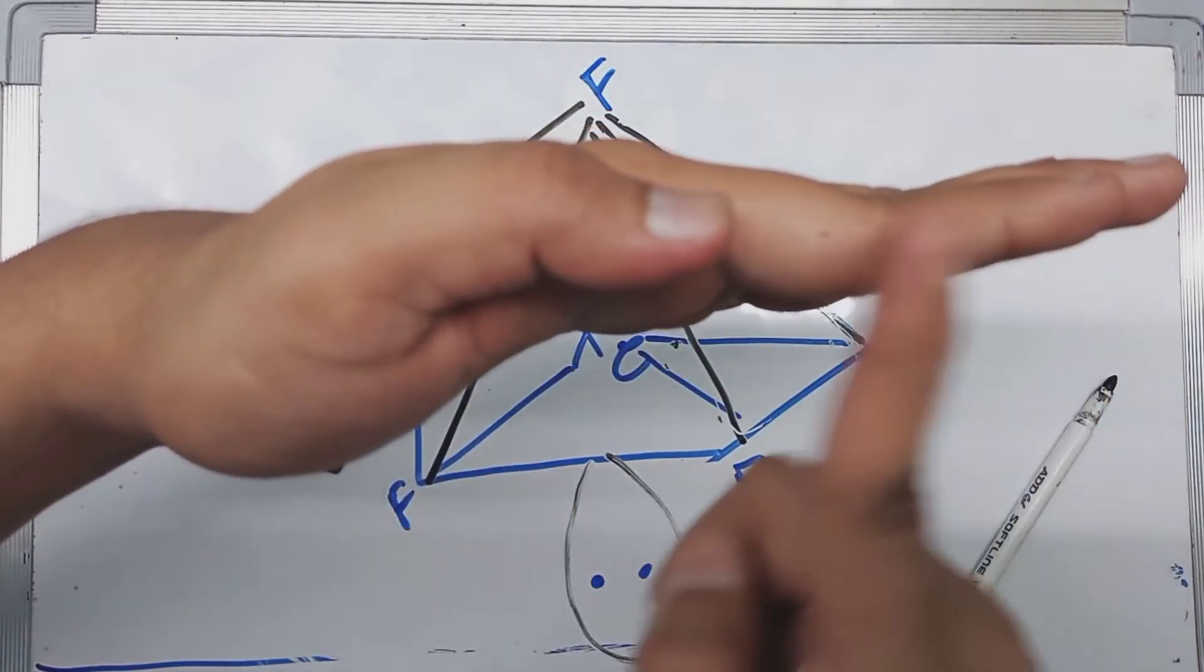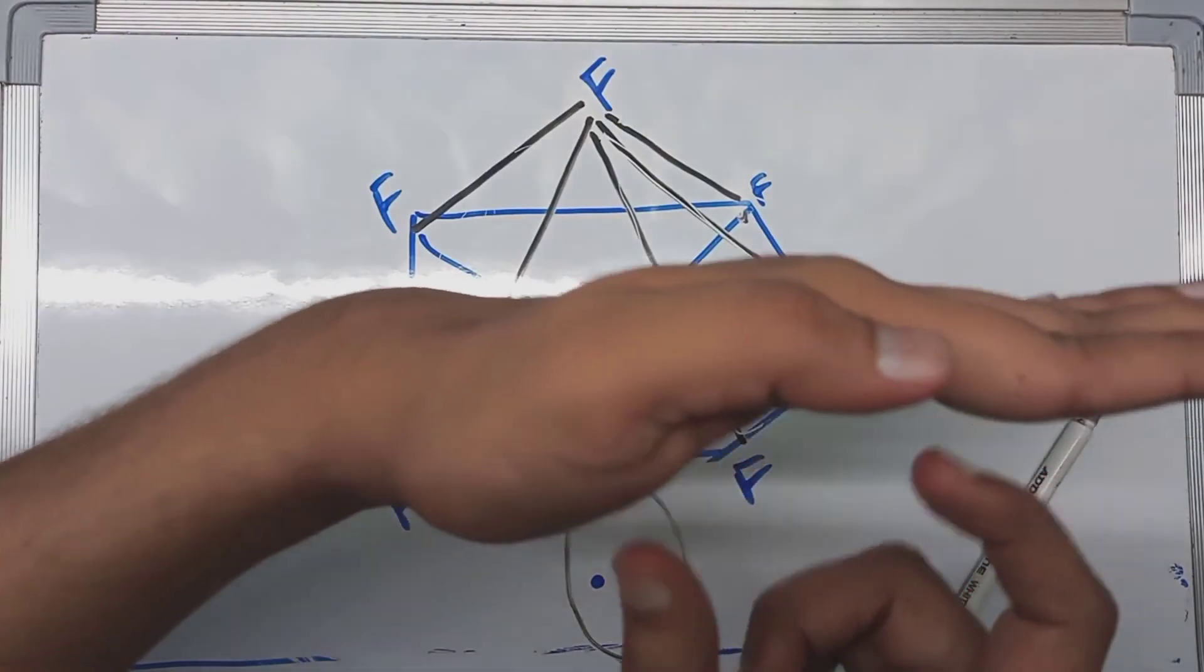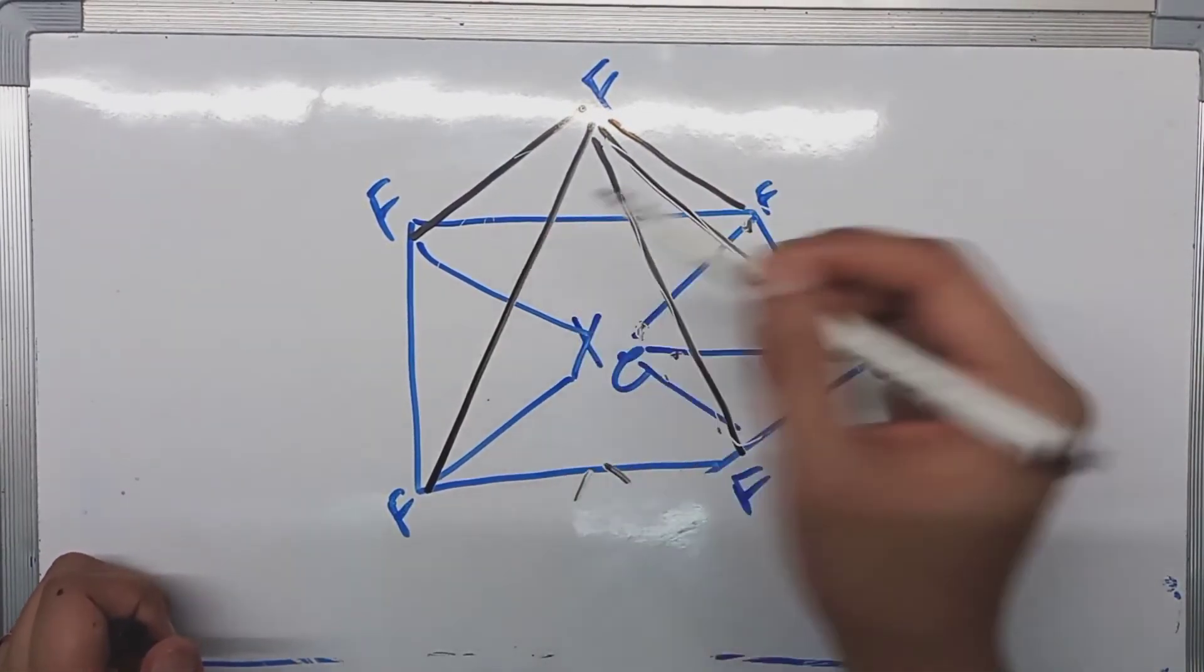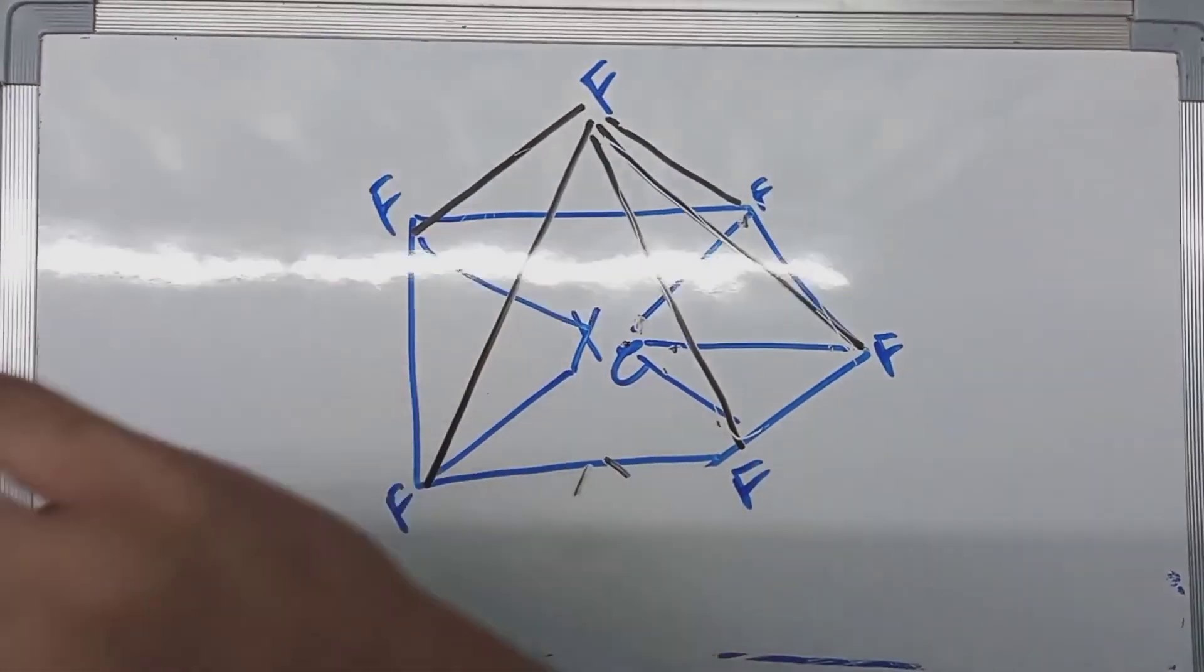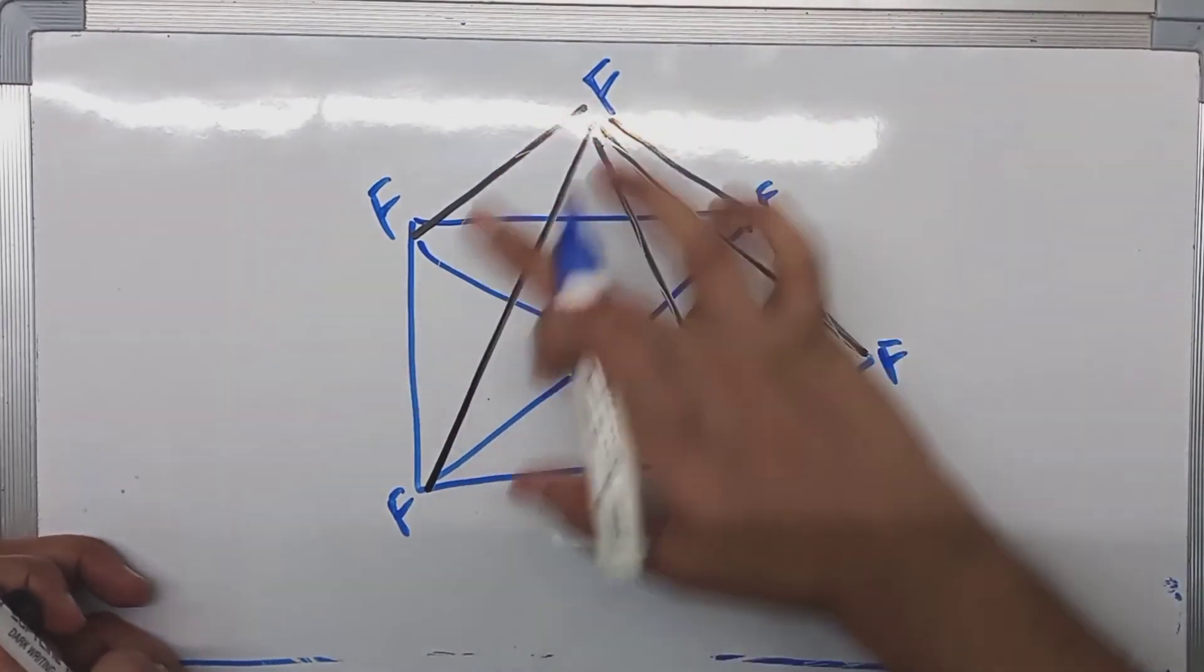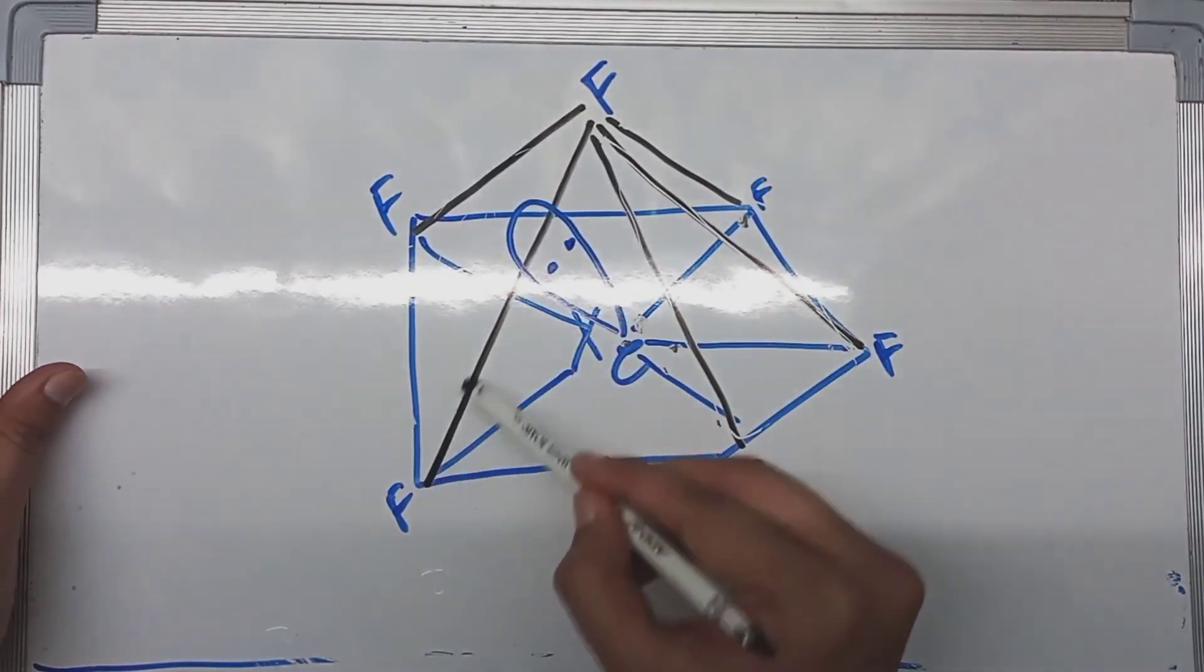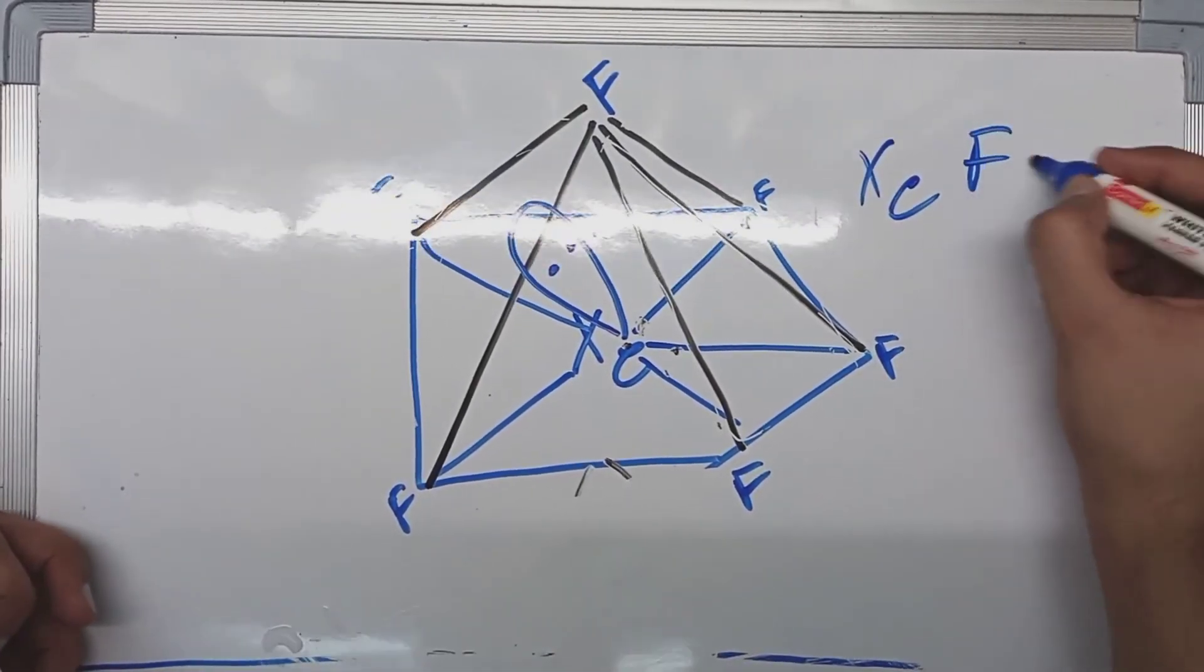This is a 2D plane. Above this you have the sixth XeF bond, and below this you have the lone pair. This lone pair experiences a lot of repulsion by these bonds, the 2D bonds. And this lone pair flips above and goes and attaches itself to any of the walls. We have 1, 2, 3, 4, 5 walls. It could attach to any wall. The lone pair is attached to this wall. So this is the actual diagram of XeF6.